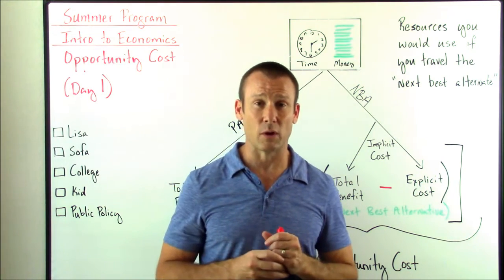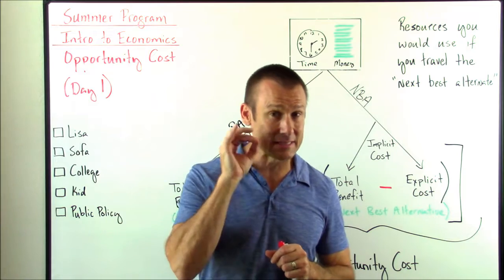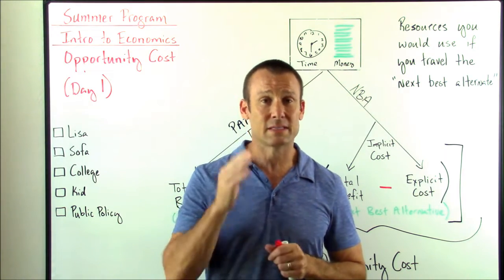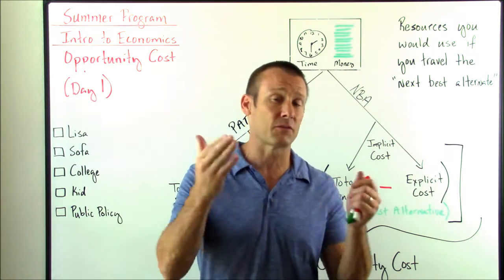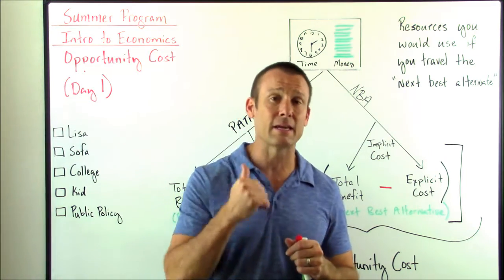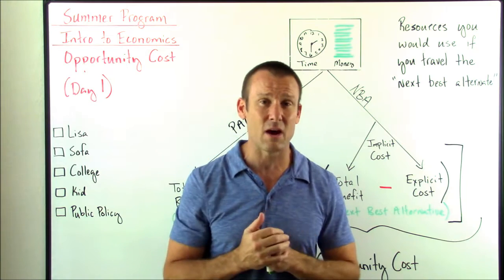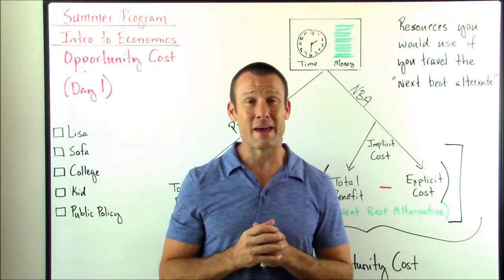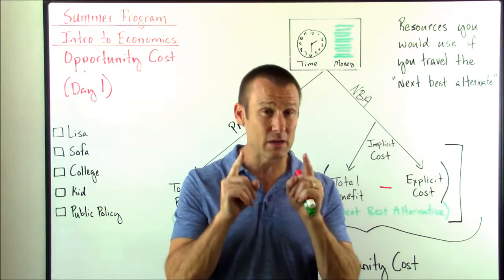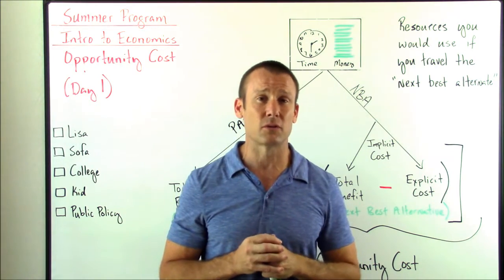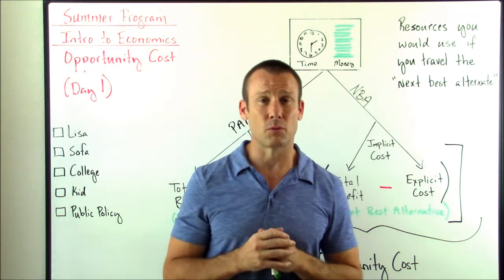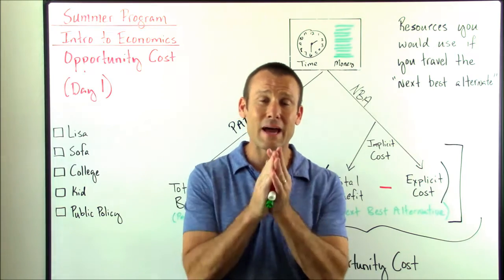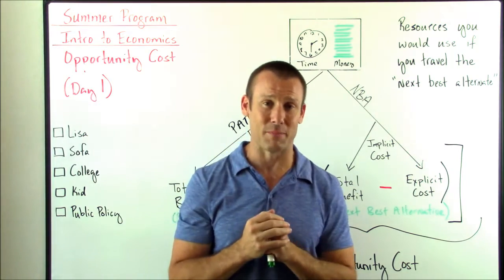So let's add a little bit to this question. Let's say that Lisa's next best alternative is she could go babysit for the Smith family. The Smith family needs a babysitter for the same time, from 10 a.m. to 8 p.m. — those 10 hours on Saturday — and let's say they pay $12. Now, with that information, and knowing that's the next best alternative for Lisa, would it be profitable to open up the lemonade stand?